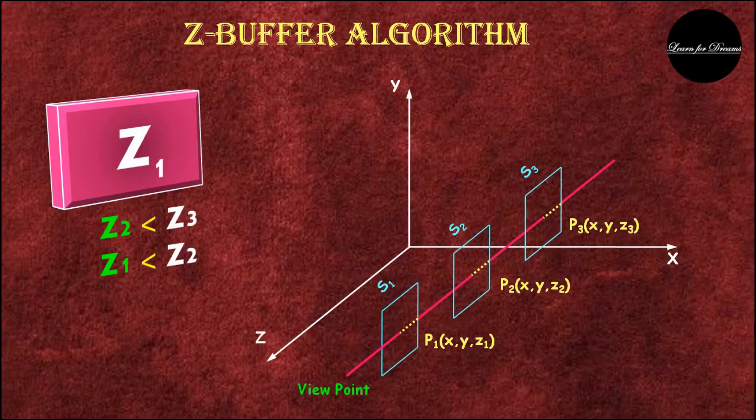Since there are no more planes left to compare, the final value stored is Z1. The plane whose Z value is stored will remain visible, and all other surfaces behind it will be hidden. This was all about hidden line and hidden surface removal algorithms.